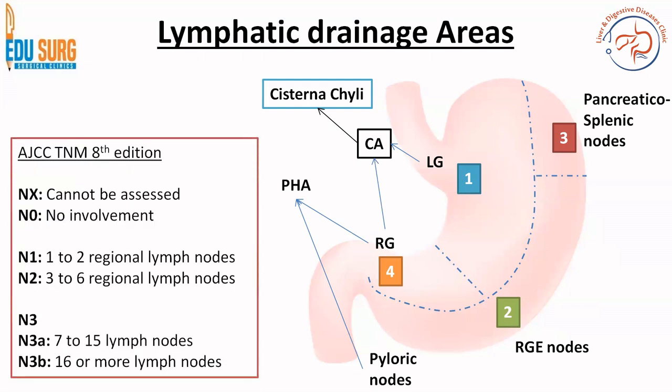Based on the lymphatic drainage and the stations described, nodal staging has been given by AJCC-TNM 8th edition where N1 is 1 to 2 regional lymph nodes, N2 is 3 to 6 regional lymph nodes, and N3 is 7 or more. You also have N3A and N3B which is 7 to 15 and 16 or more lymph nodes. To know the details of what to call regional and what not to call regional, you need to understand the types of gastrectomies, which is beyond the scope of an anatomy lecture.